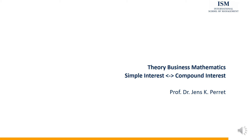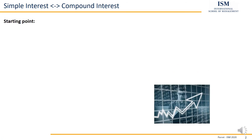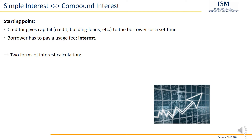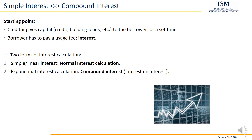The basic idea behind interest in general: there's a creditor who gives capital to a borrower for a certain period of time. Due to the borrower getting the money, he has to pay a fee for using this money. This fee is what we call interest. There are basically two forms of interest: normal interest or simple linear interest, and compound interest.